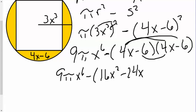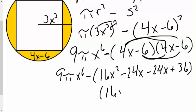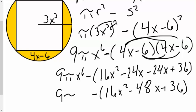Negative 6 times 4x gives me another negative 24x, and then negative 6 times negative 6 gives me a positive 36. Combining like terms gives me 16x squared minus 48x plus 36, and all of that is subtracted from 9 pi x to the 6.